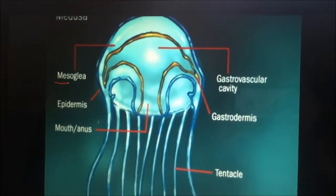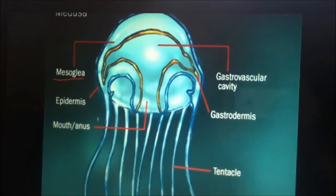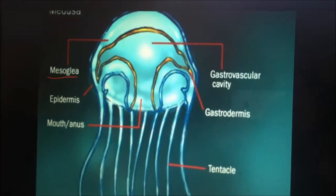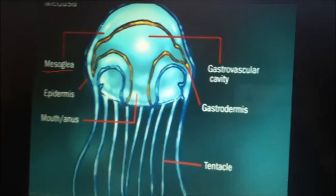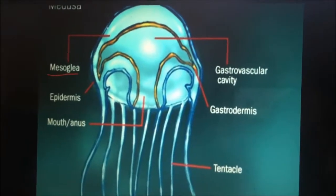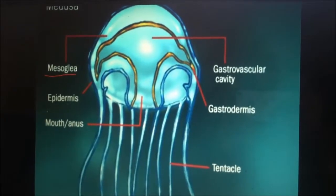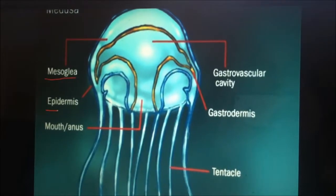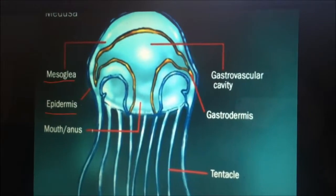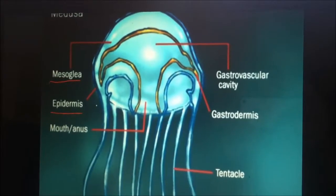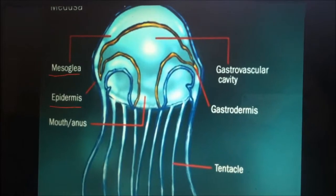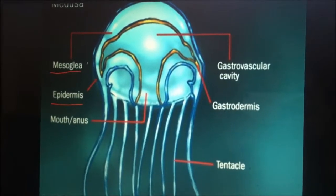Scyphozoa — the jellyfish. The mesoglea is a jelly-like substance that separates the epidermis from the gastrodermis — that's the little jelly part. The epidermis covers the external body surface — that's the skin.